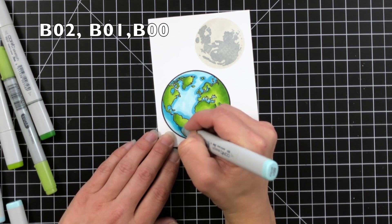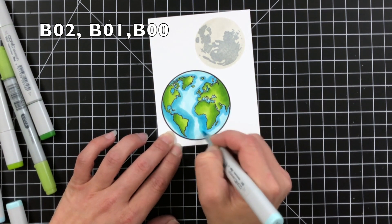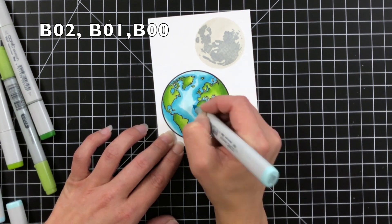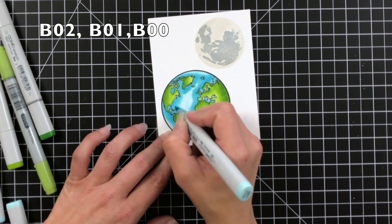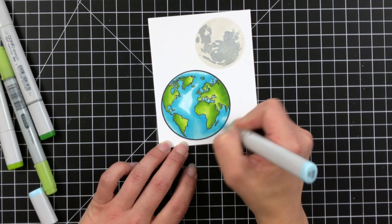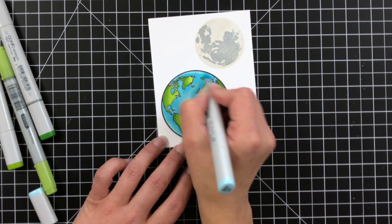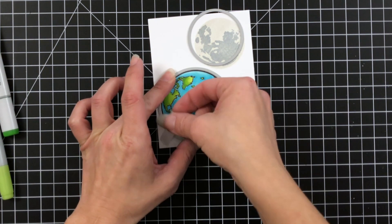I'll blend that out with the B01. Going over the B02 and just blending out a little bit further. Then I'll come in again with the B00 and blend that out even further. This is part of an amazing stamp set. There are some really fabulous images on here. So definitely be sure to head over to my blog and check that out. I will have more inspiration there as well.